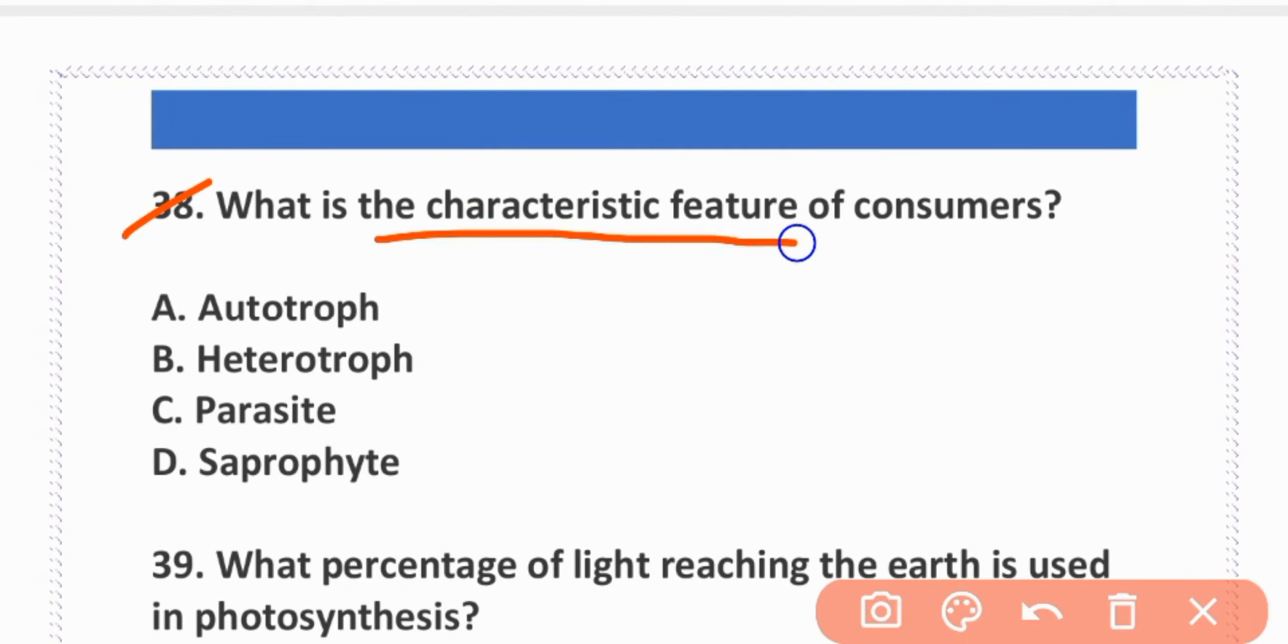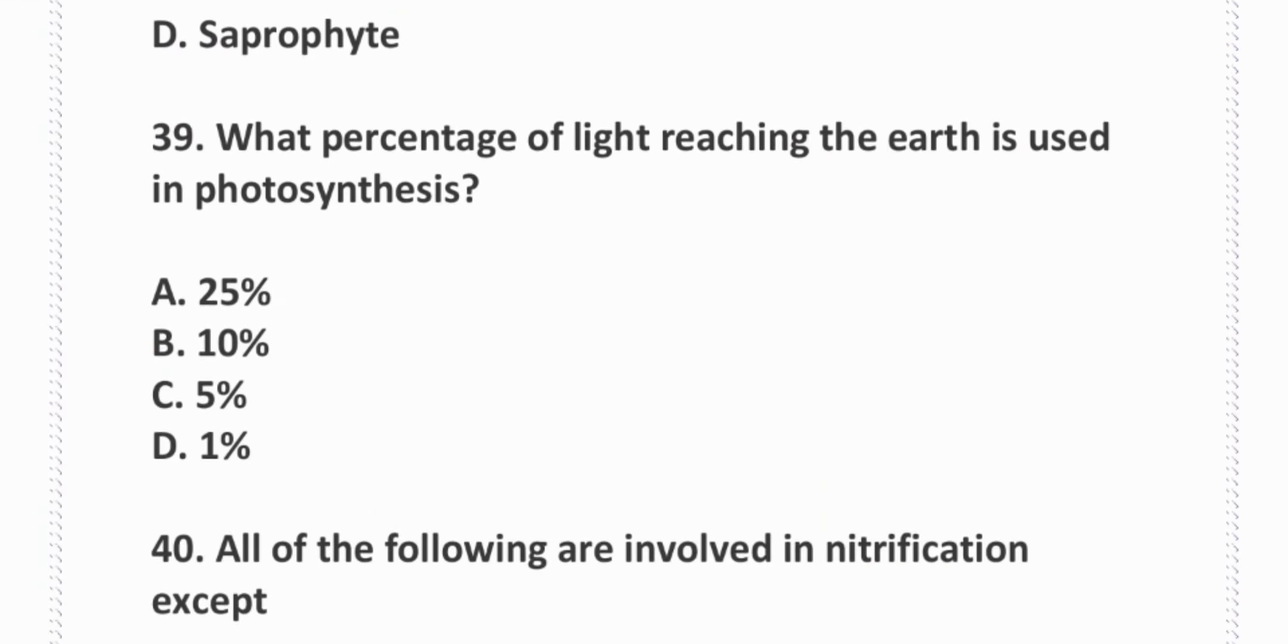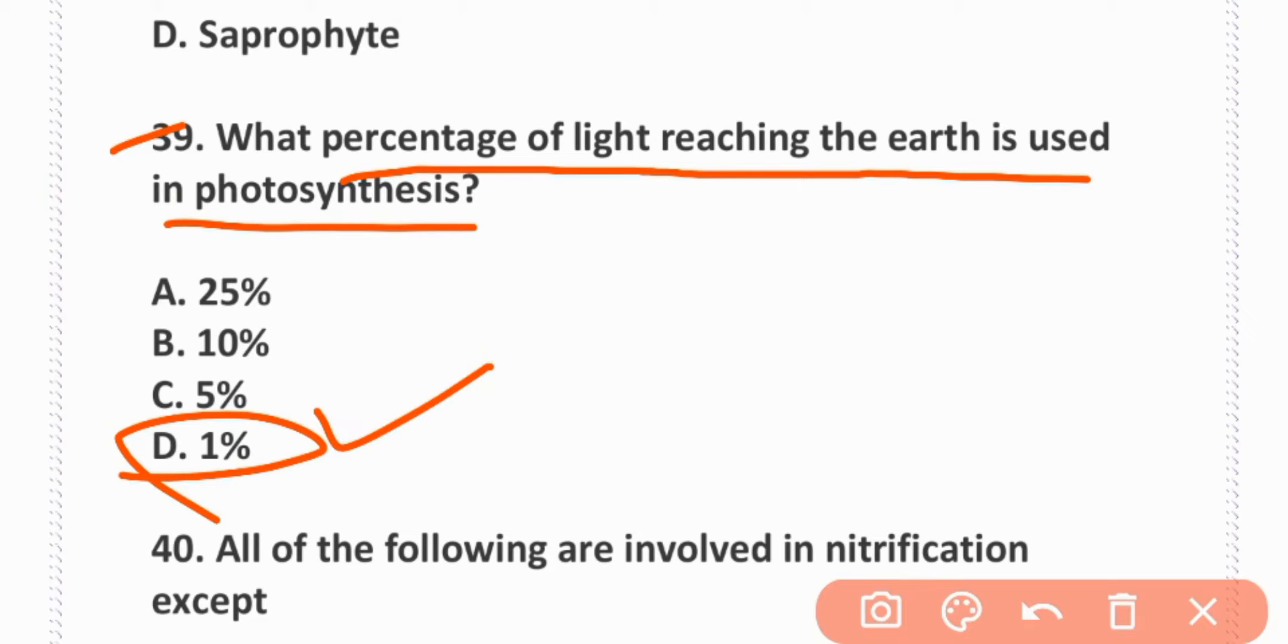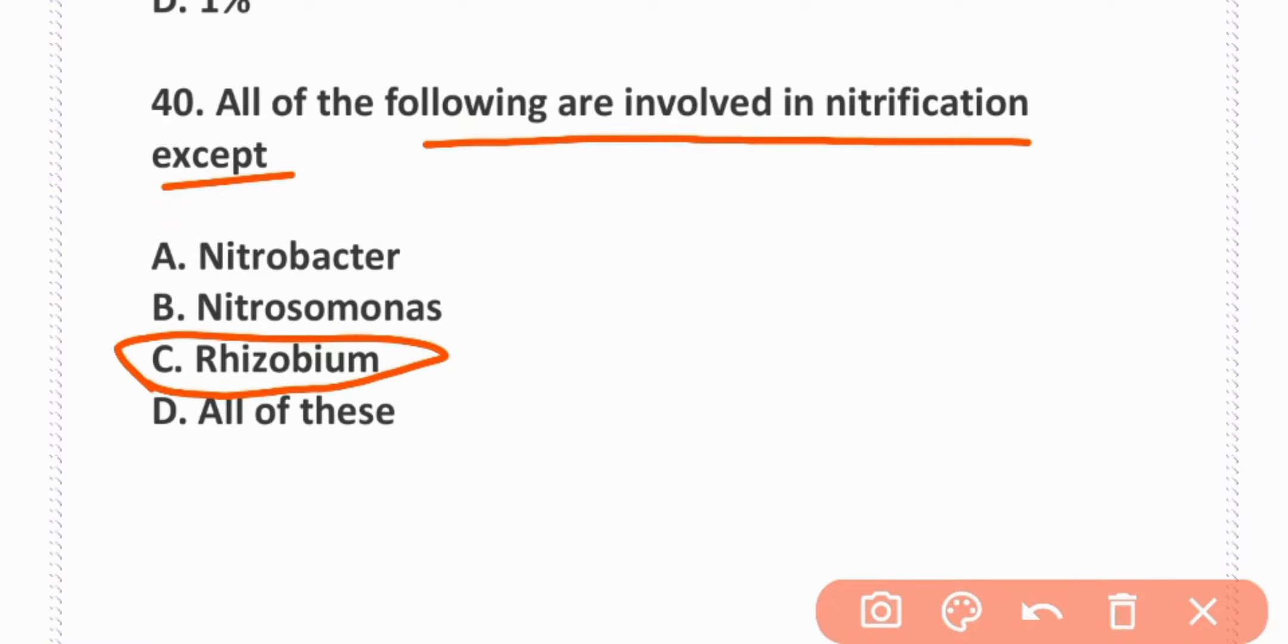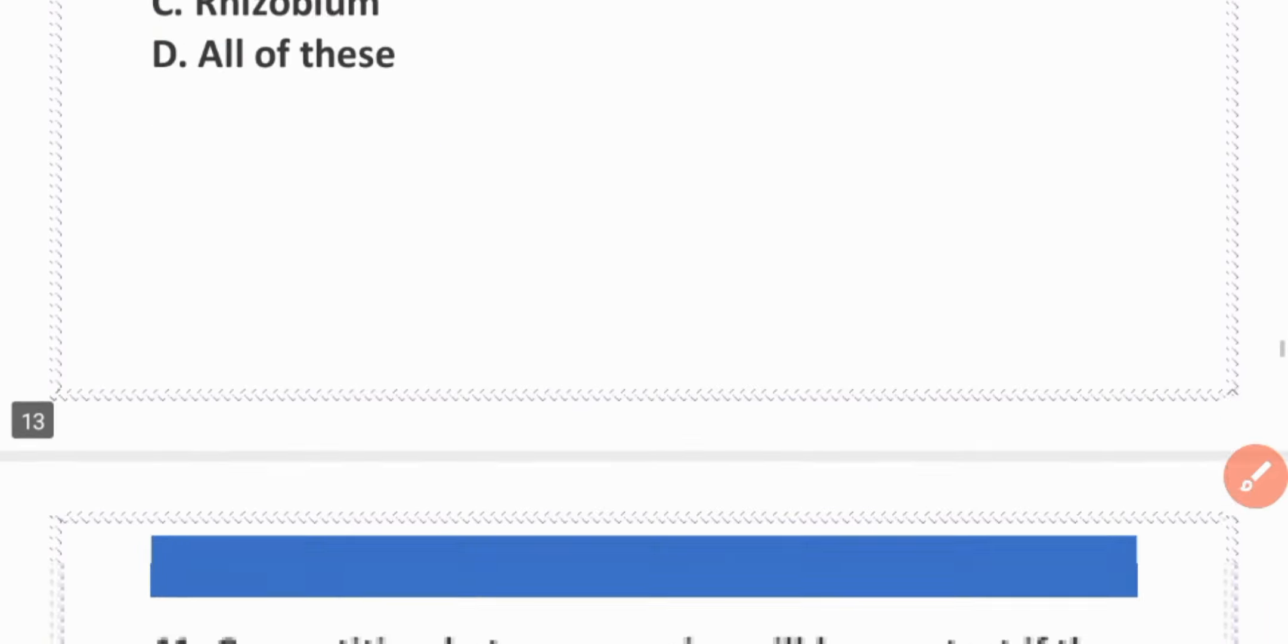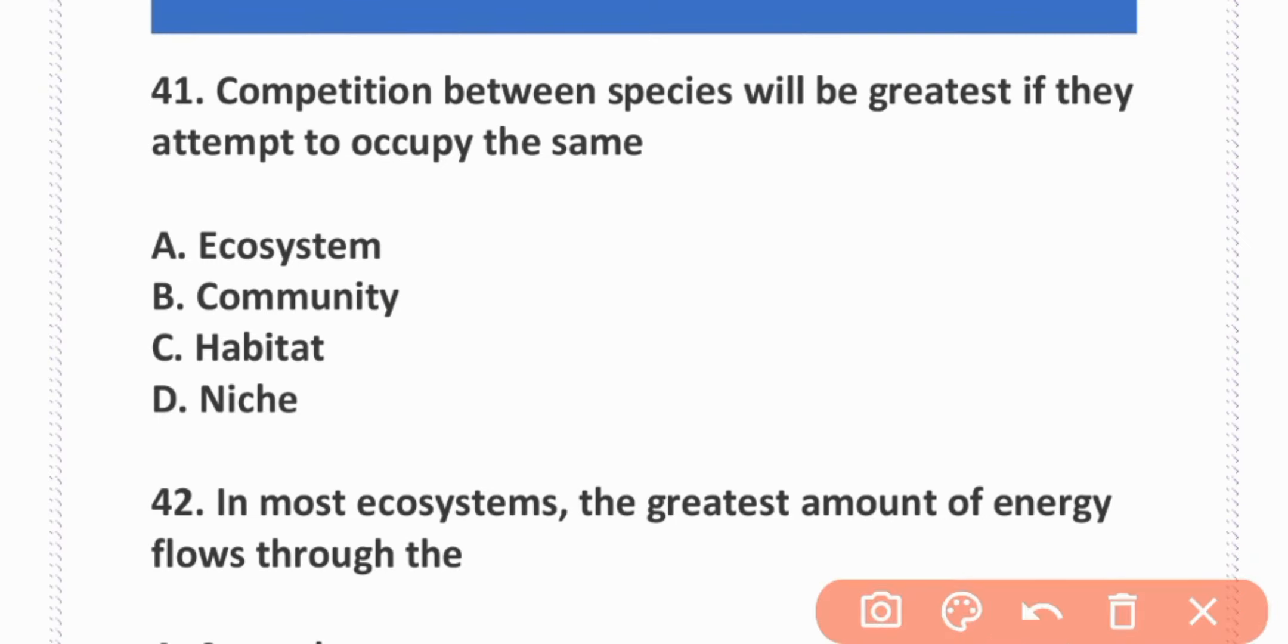What characteristic of heterotrophs are true crops? Option B is correct, heterotrophs. What percentage of light reaching the earth is used in photosynthesis? 1%. All of the following are nitrification bacteria except Rhizobium.